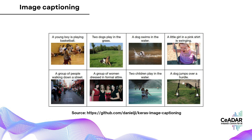One of the most popular applications is image captioning. This is where the model takes an input image and generates a detailed description of what's going on — for example, describing a photo as 'A golden retriever is playing with a ball in a grassy park on a sunny day.' Image captioning is useful in many real-world applications: social media platforms can use it to automatically generate alt text for visually impaired users, e-commerce retailers can quickly generate product descriptions from images, and photo management systems can use it to tag large photo libraries without manual effort.